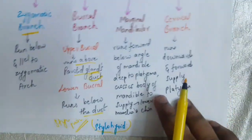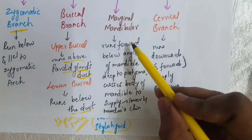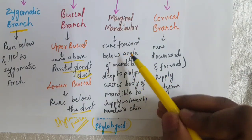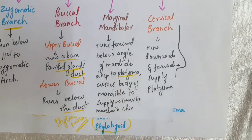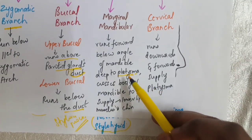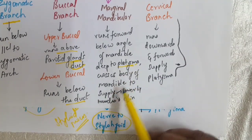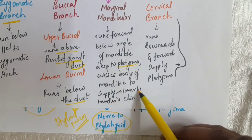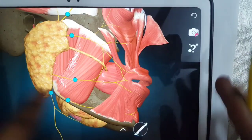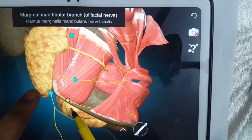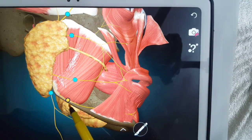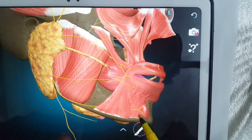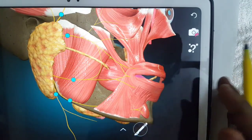The next branch is the marginal mandibular branch. It runs forward below the angle of the mandible, deep to the platysma — the muscle of facial expression — and crosses the body of the mandible to supply the muscles of the lower lip and chin. In the diagram, this is the marginal mandibular nerve running along the angle of the mandible.